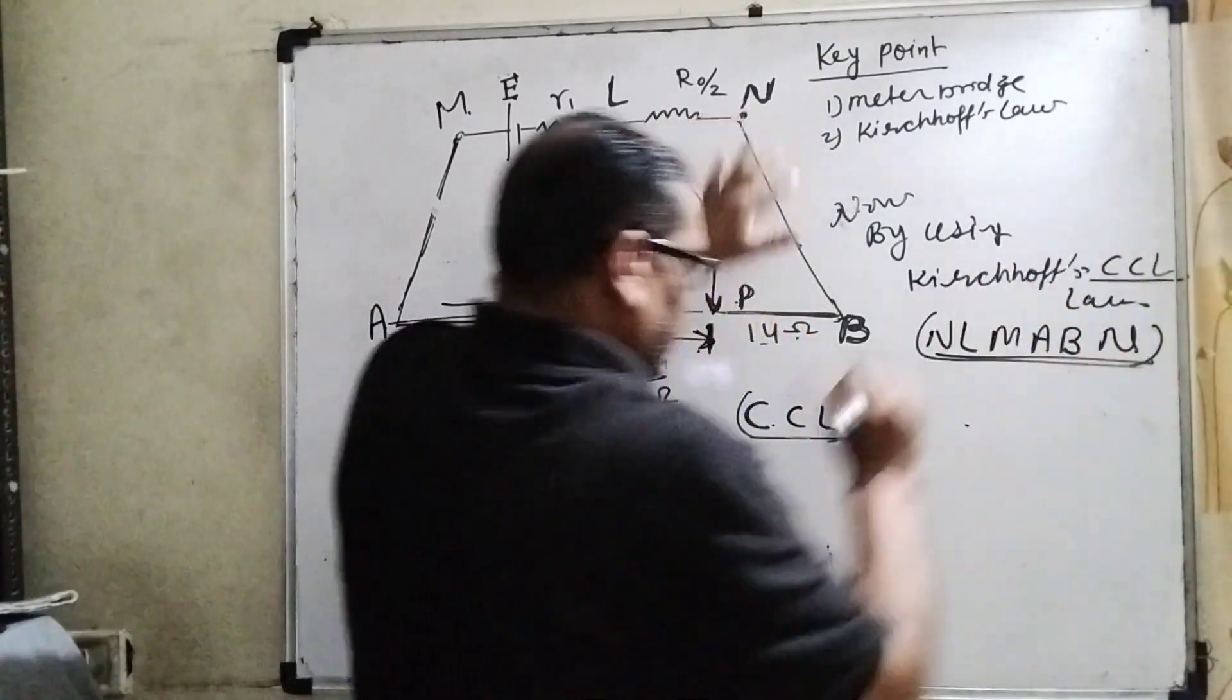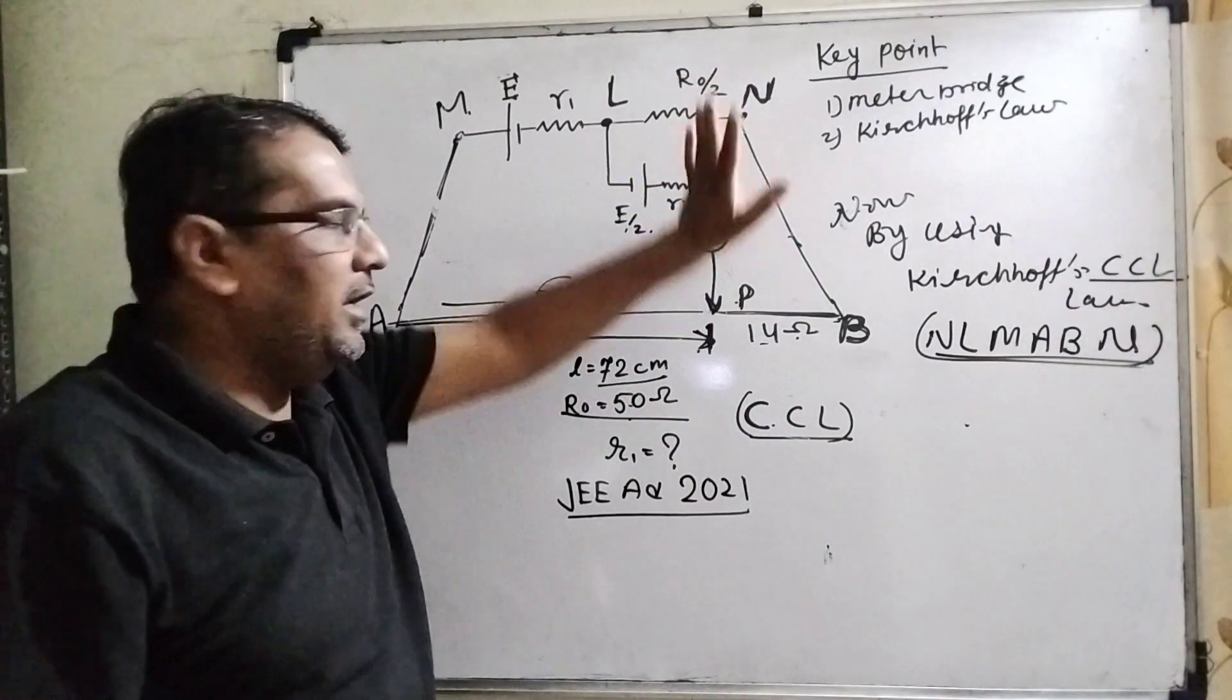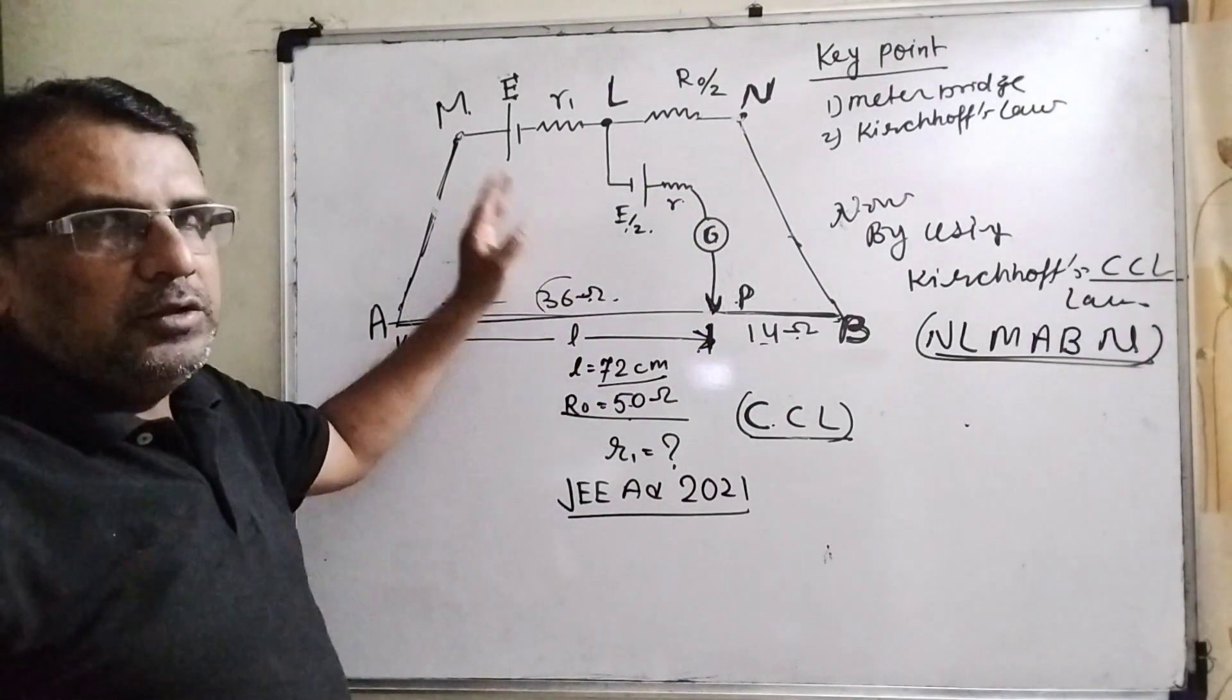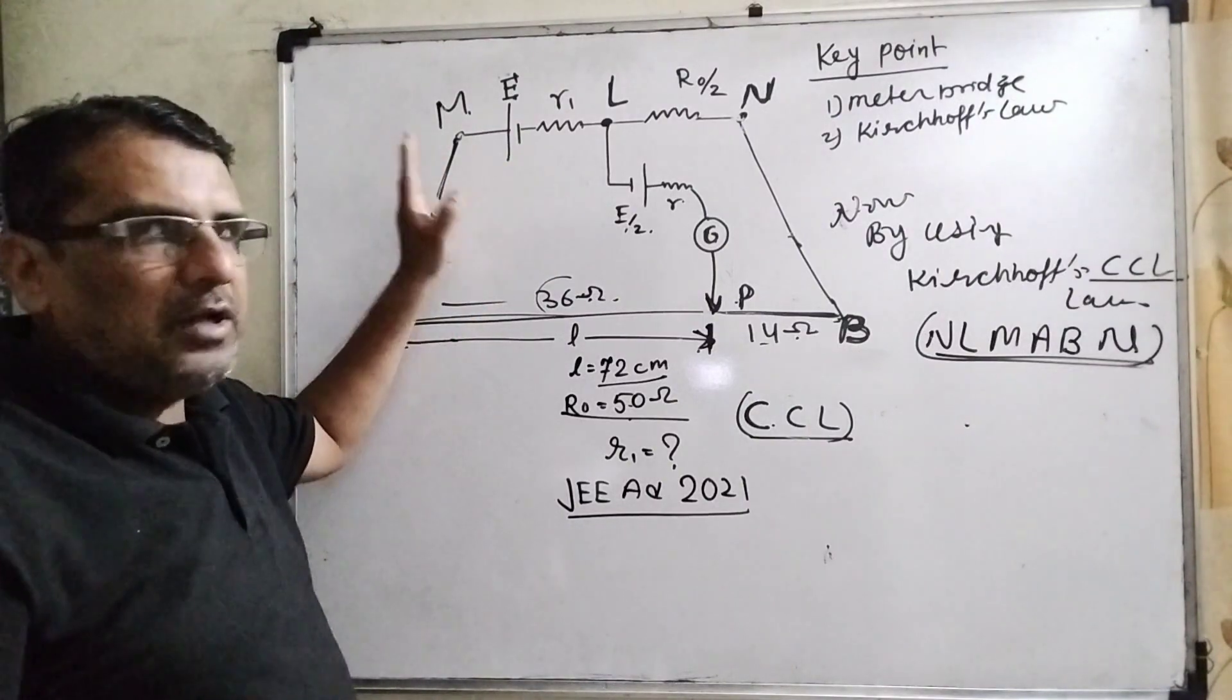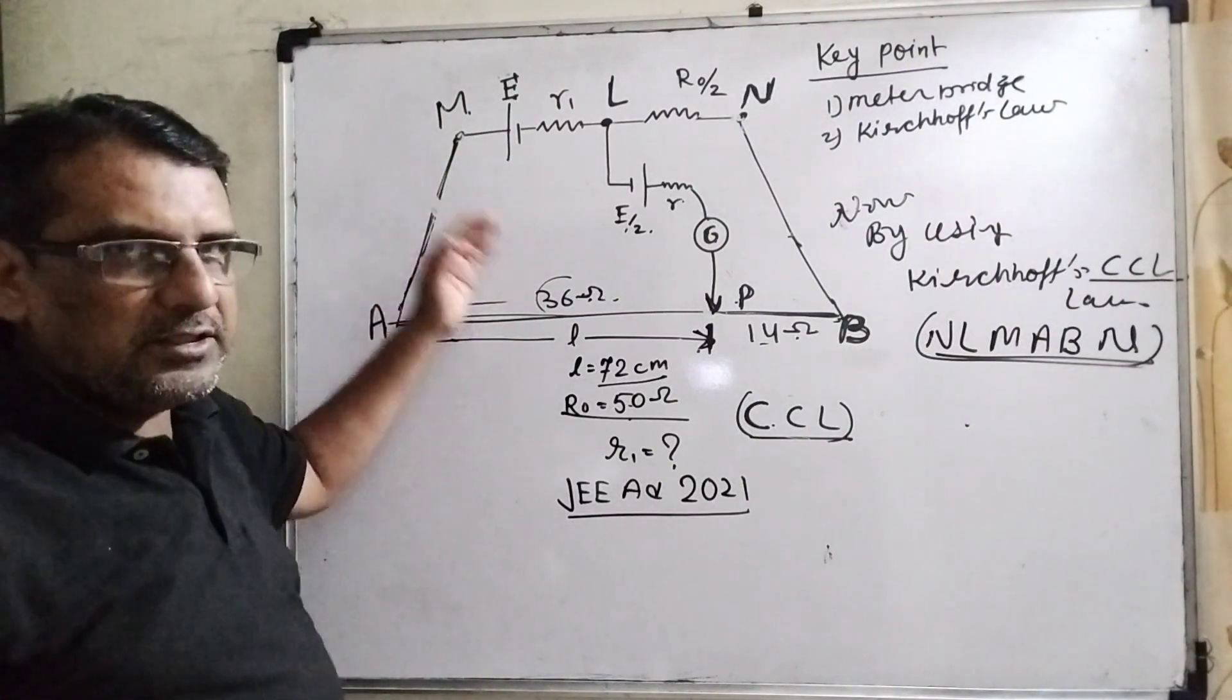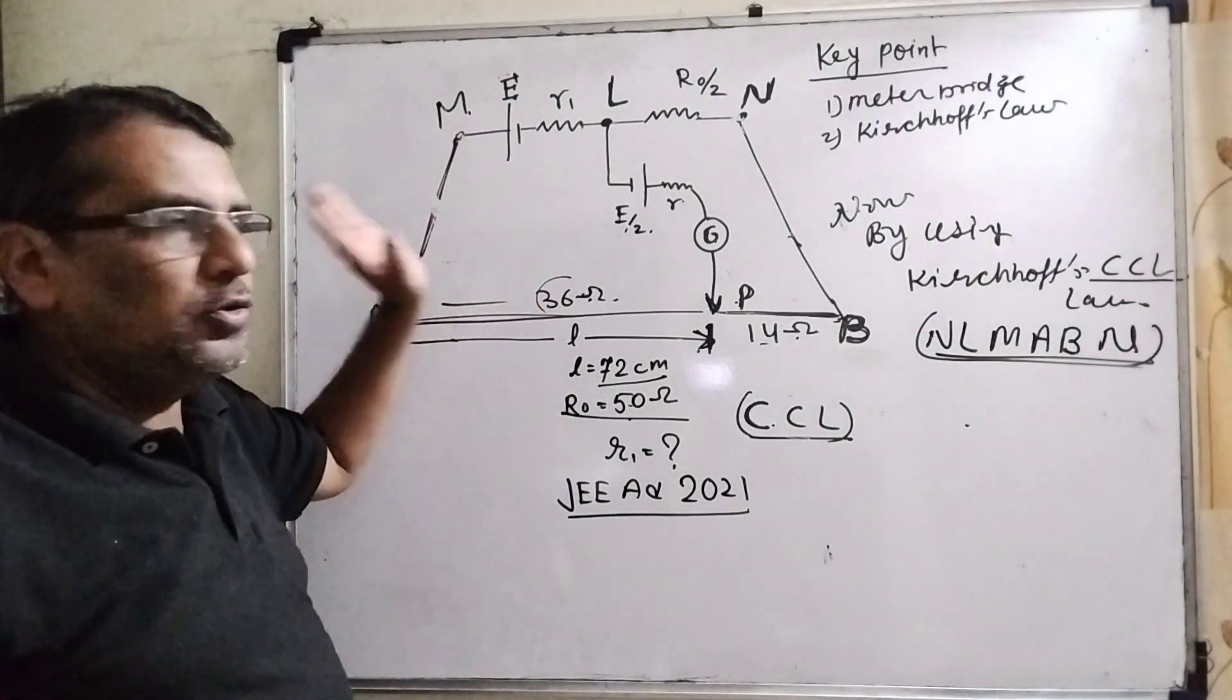So it is the closed path NLMABN. Here the product of resistance and current, its summation, is equal to EMF which is present in this closed path.